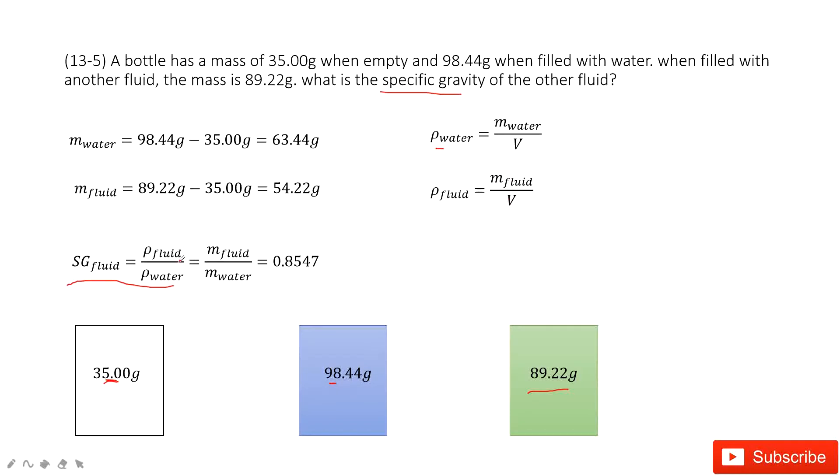Therefore, we can input these two equations inside. And we can find, yes, the density ratio is just equal to mass ratio if this volume is the same, right? And then input the known quantities for mass of fluid and mass of water. We can get the specific gravity as there. Thank you.